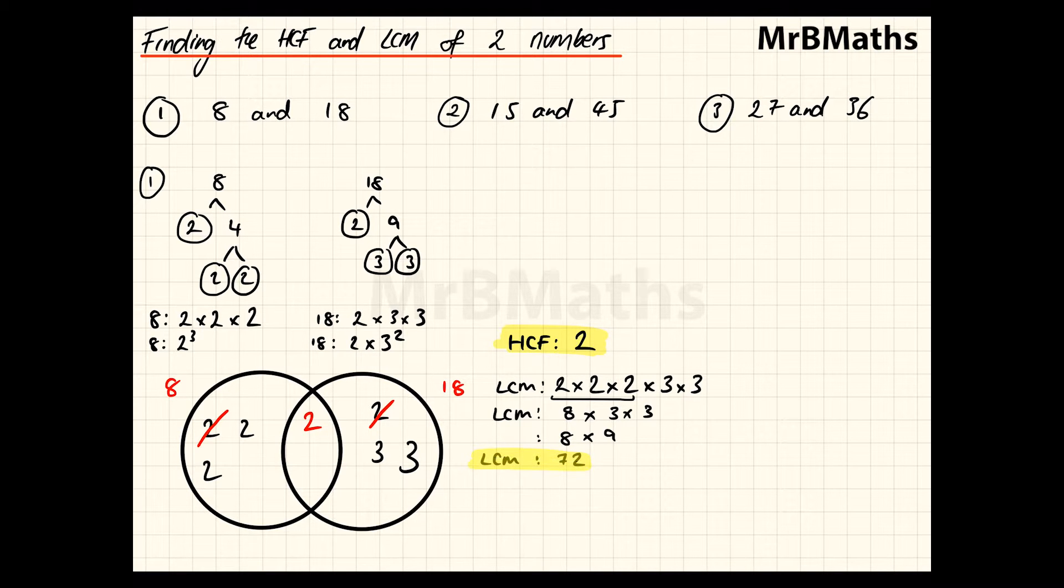So hopefully you got that. If you didn't just go through and check the prime factor tree first, make sure you've circled prime numbers and not just any number. Then once you've done that, check the Venn diagram, make sure you've written exactly 3 twos for 8 and 1 two and 2 threes for 18. Then check you've crossed out only 1 set of 2, 1 pair of 2. And then just, if that's all ok, just check your multiplication for the last step. But you should have got a HCF of 2 and a LCM of 72.